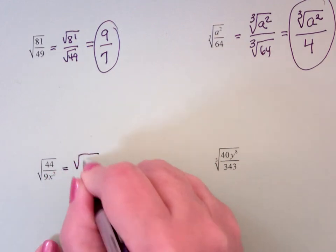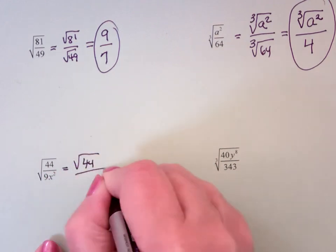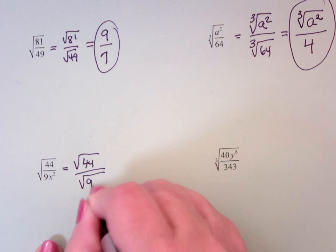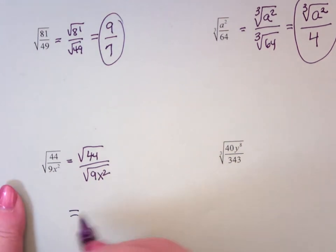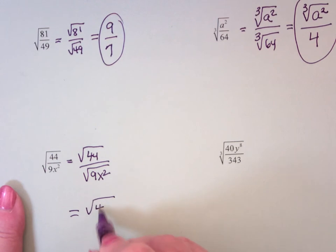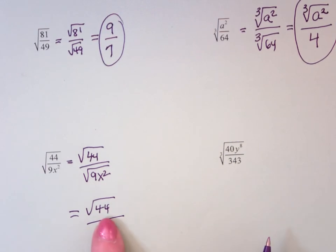This is the square root of 44 over the square root of 9x squared, which is the square root of 44 over, what's the square root of 9x squared? 3x. Now, unfortunately, the square root of 44 has a square in it.